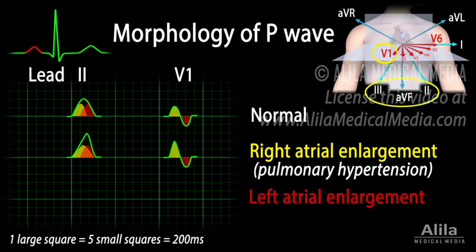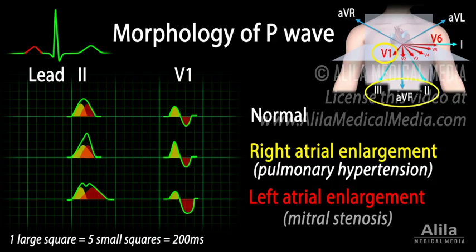In left atrial enlargement, depolarization of the left atrium lasts longer than normal. This results in a wider P wave of more than 3 small squares. The waveform may also be notched. In V1, the negative portion of the P wave is deeper and wider. Left atrial enlargement is commonly due to mitral stenosis.